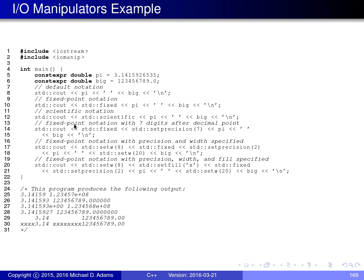In the next example I use fixed-point notation by outputting the fixed manipulator before printing pi and big. Now pi prints as 3.141593 — one additional decimal place compared to before — and the large number prints with all its integer digits followed by zeros, in fixed-point notation with no scientific notation E notation.